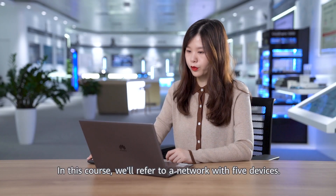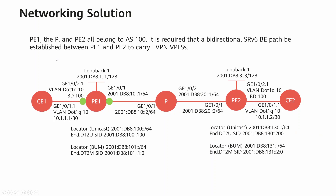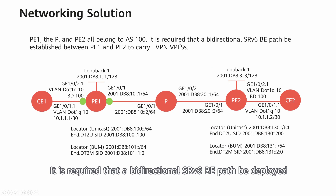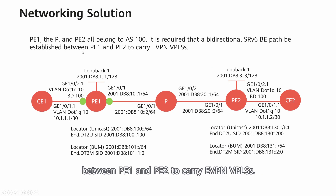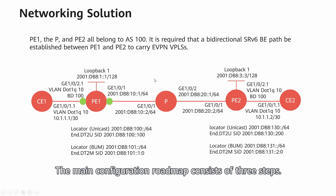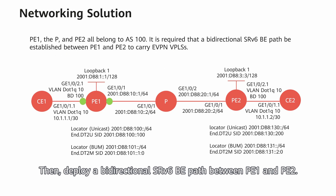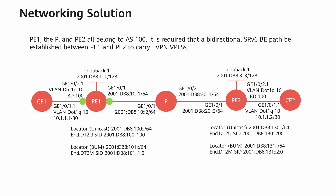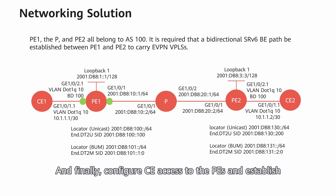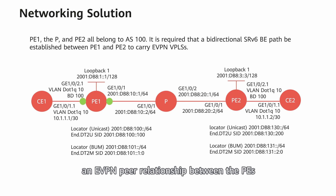In this course, we refer to a network with five devices. P1, the P, and P2 belong to AS100. It's required that a bidirectional SRV6BE path be deployed between P1 and P2 to carry EVPN-VPLS. The main configuration roadmap consists of three steps: first, enable IS-IS on P1, the P, and P2 to achieve basic route reachability; then, deploy a bidirectional SRV6BE path between P1 and P2; and finally, configure CE access to the PEs and establish an EVPN peer relationship between the PEs to transmit information between the CEs.